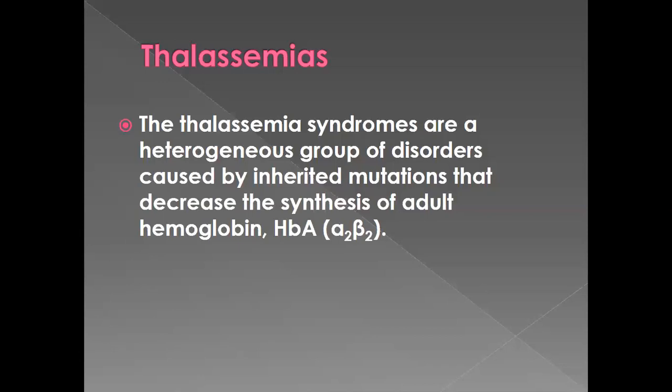The thalassemia syndromes are a heterogeneous group of disorders characterized by inherited mutations that decrease synthesis of adult hemoglobin A, which has two alpha chains and two beta chains. So this is a group of disorders in which inherited mutations decrease the synthesis of adult hemoglobin A.